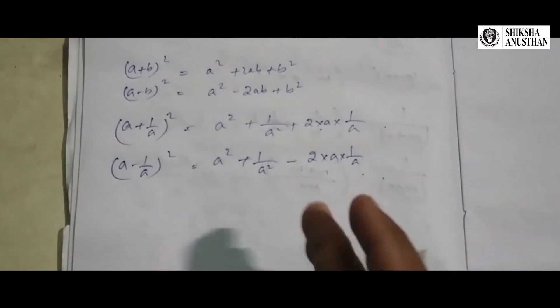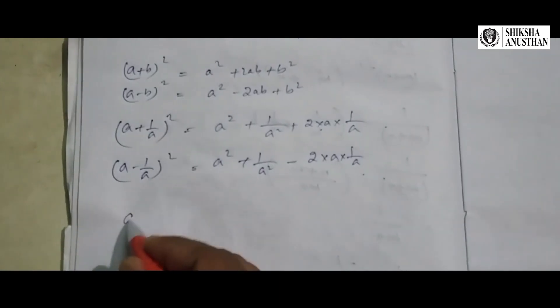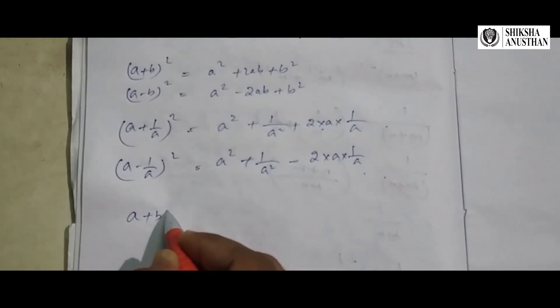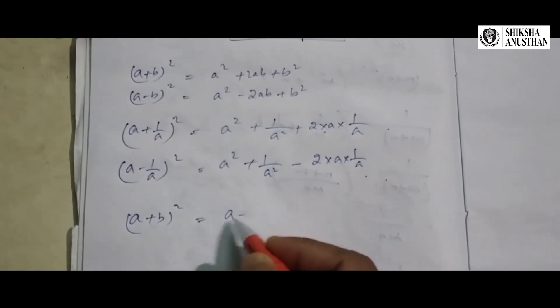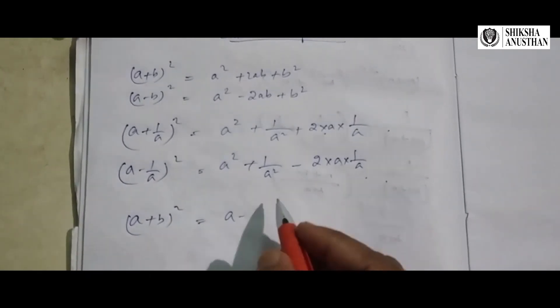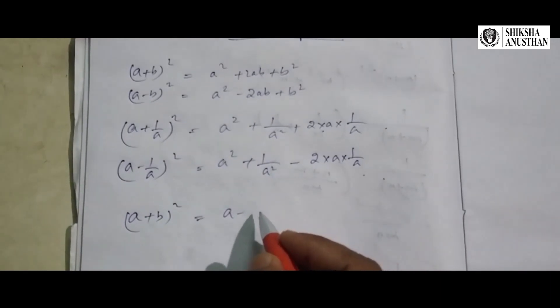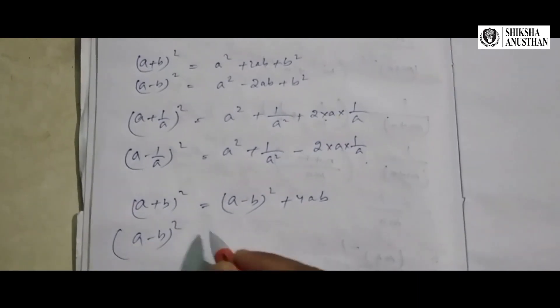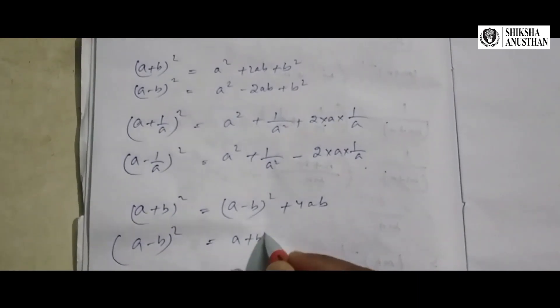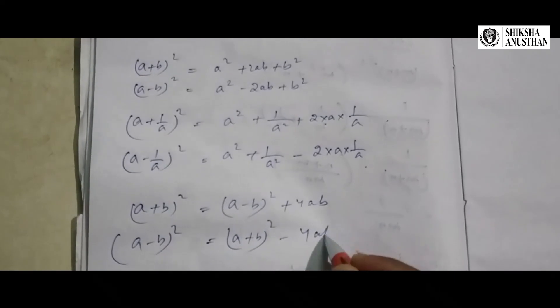Now we need to find some alternatives — how can you find (a - b) from (a + b)? The formula is: (a + b) whole square equals (a - b) whole square plus 4ab. Therefore, (a - b) whole square equals (a + b) whole square minus 4ab.